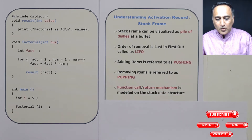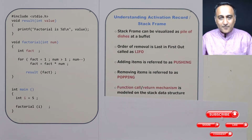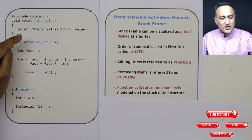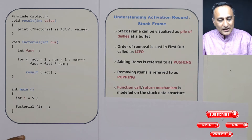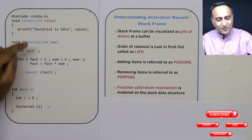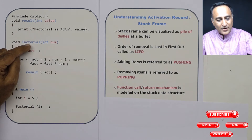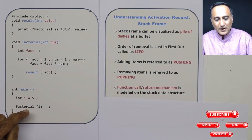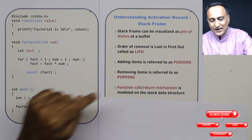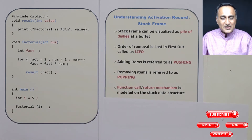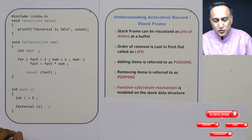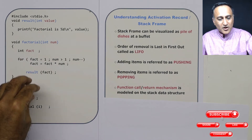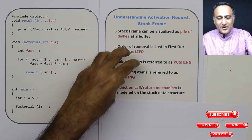The important thing is the keeping track of which function is calling which, and where to return — all of this is taken care of by the stack frame or activation record. After main calls factorial and factorial calls result, after result finishes I should be able to come back to factorial, and after factorial finishes I should be able to come back to main. This call-return mechanism is possible because of maintaining a record of each of these functions using the stack LIFO principle.